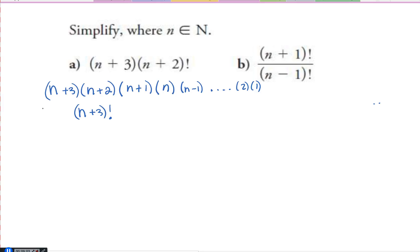And if I put another coefficient in front of n plus 4 times n plus 3 and then n plus 2, because it keeps going all the way to 1, that would just be n plus 4 factorial, and so on. So that's the answer for a.